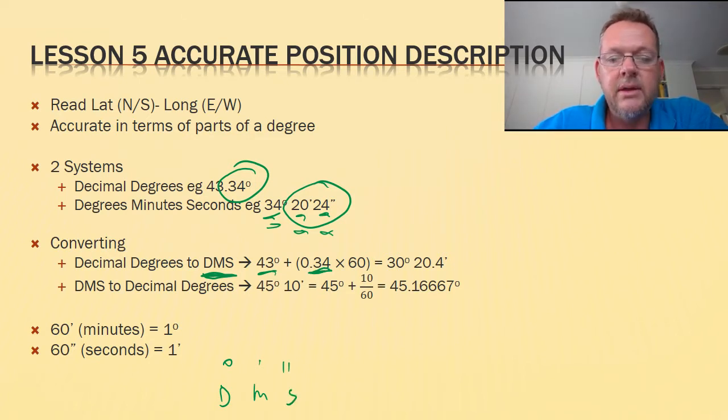I told you that there were 60 minutes per degree. So to do the conversion, I would just use that hundredths, 34 hundredths, and multiply by 60. What would happen is I would have now 43 degrees, but now I would have 20.4 minutes.